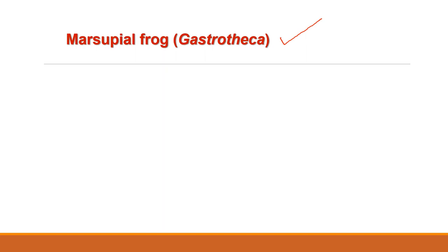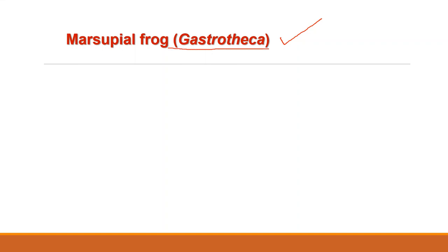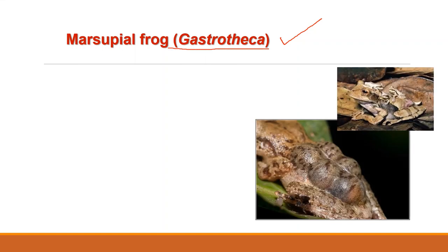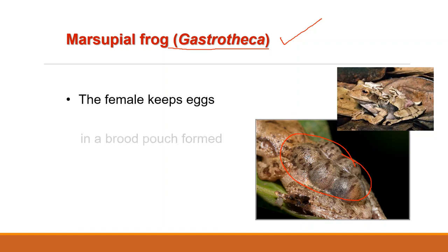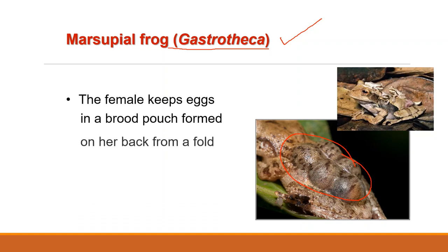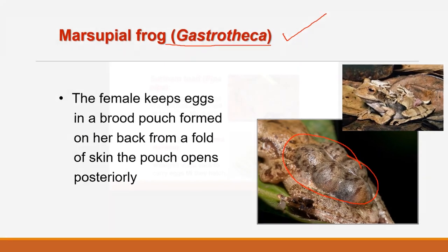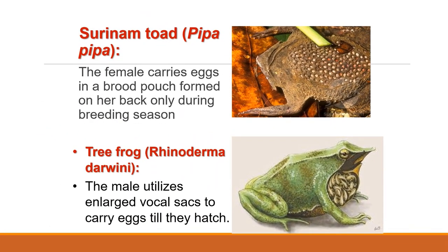Yet another instance of an amphibian carrying the fertilized eggs is seen in the female of the marsupial frog Gastrotheca, where the female keeps the eggs in a brood pouch formed on her back from a fold of skin. This pouch opens posteriorly. The female Suriname toad, Pipa pipa, carries eggs in a brood pouch formed on her back, but only during the breeding season.